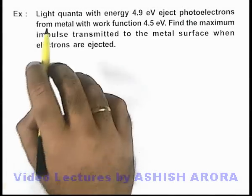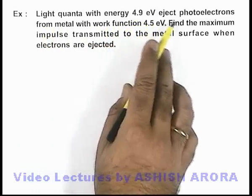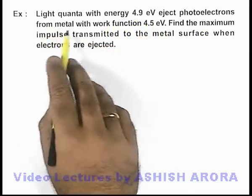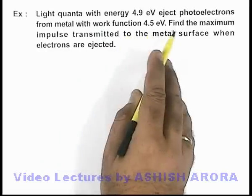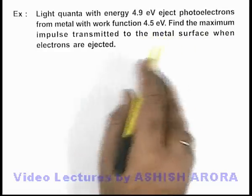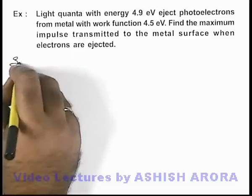In this example, we are given that light quanta with energy 4.9 electron volts eject photoelectrons from a metal with work function 4.5 electron volts. We are required to find the maximum impulse transmitted to the metal surface when electrons are ejected.